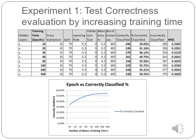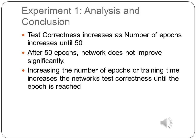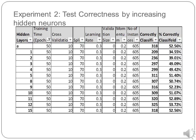The graph shows instances correctly classified, with the X axis representing training time and Y axis representing instances correctly classified. This experiment shows that as the number of epochs increases until 50, the network improves. However, after 50 epochs, the network does not improve significantly. Increasing the number of epochs increases the network test correctness until the optimal epoch is reached.